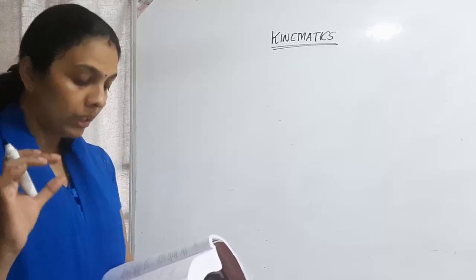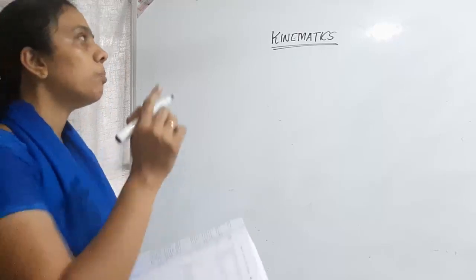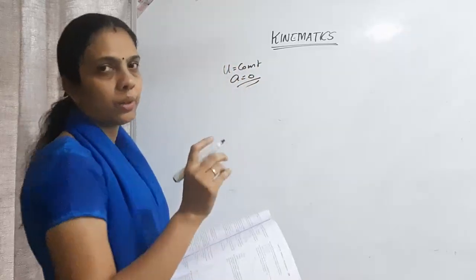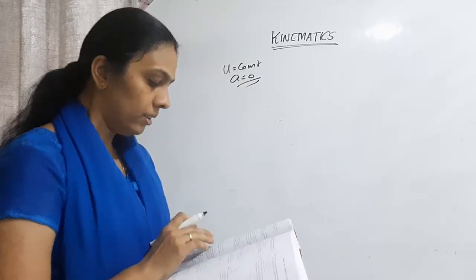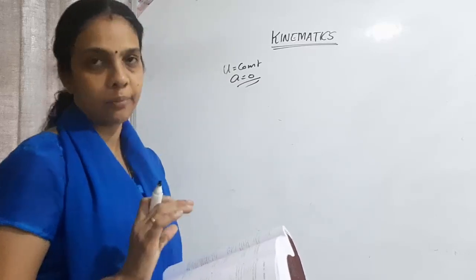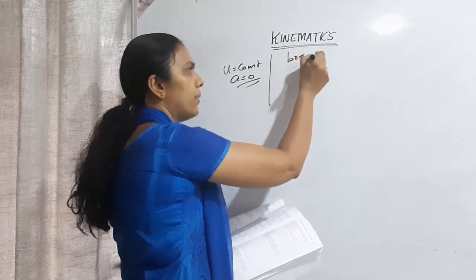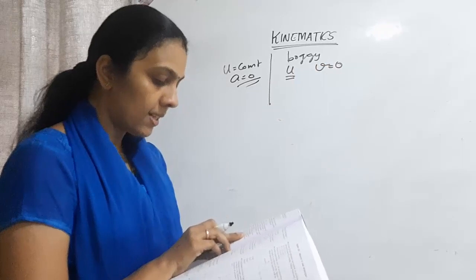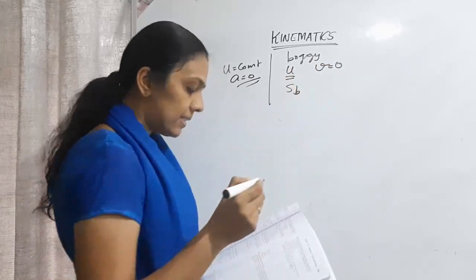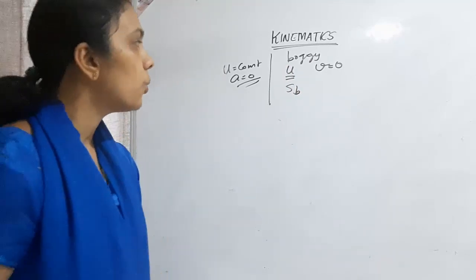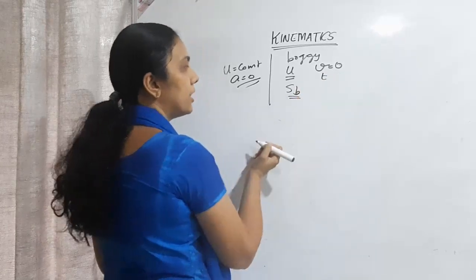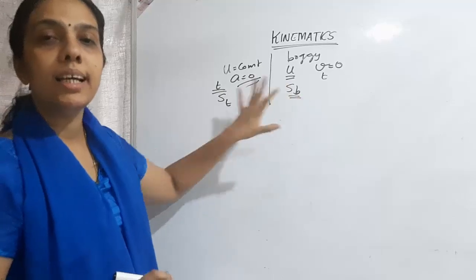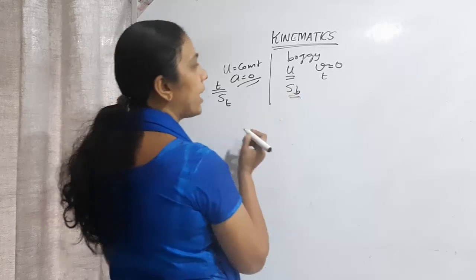The train is moving uniformly — constant velocity, no acceleration. The boggy, when detached, has initial velocity u, and finally comes to rest after covering some distance. In time t, what will be the distance covered by the boggy and what will be the distance covered by the train? We need to find whether there is any relation between these two.